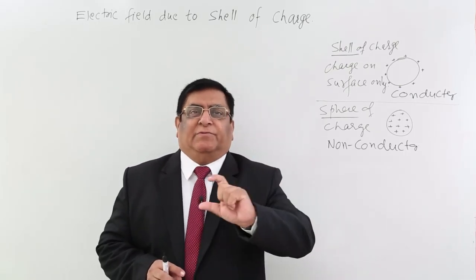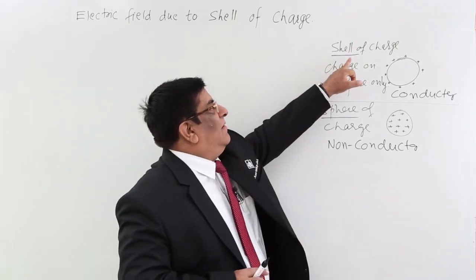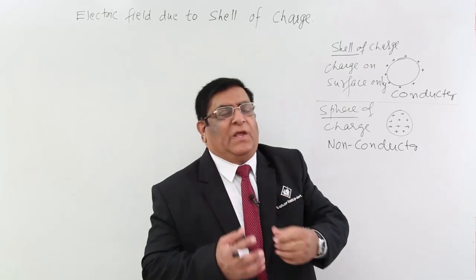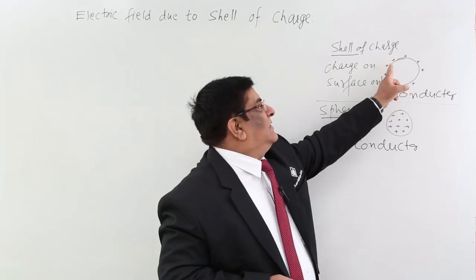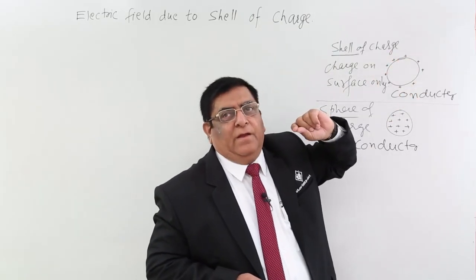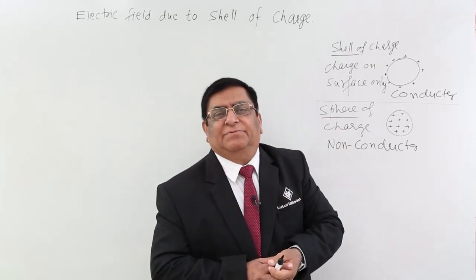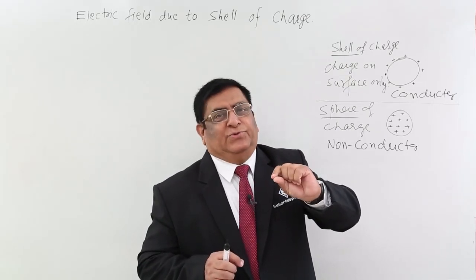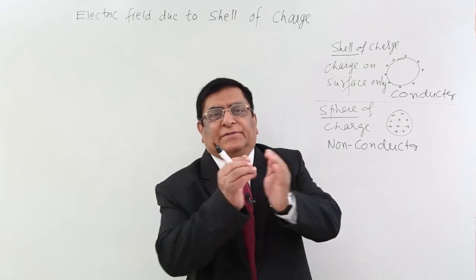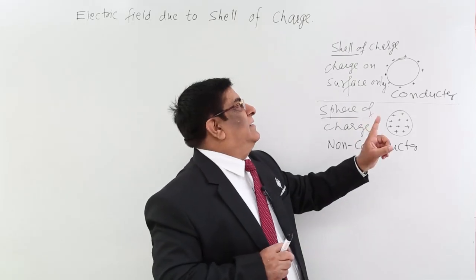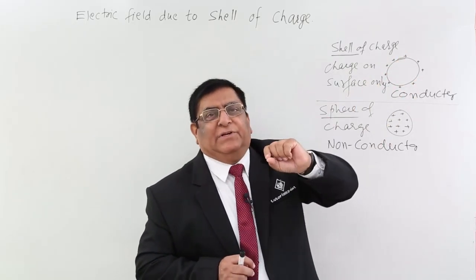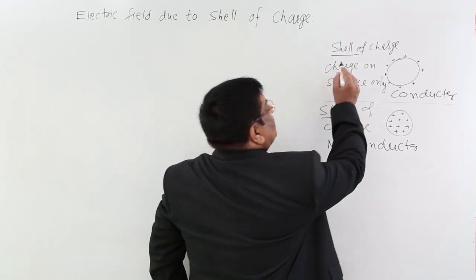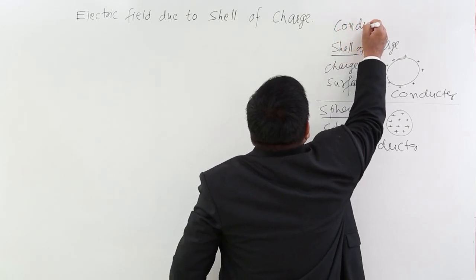You must remember the difference between the two. One is called a shell of charge — I have taken a shell only. Shell means like a football; when given charge, due to repulsion the charges stay only outside the surface. The other case is a full sphere made of metal, which is a conductor, and I give it a charge. Any place I give the charge, due to repulsion it will come to the surface, and the conductor allows it. So again it comes to the surface.